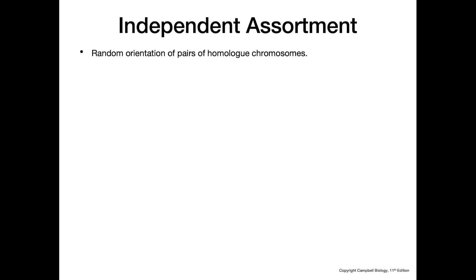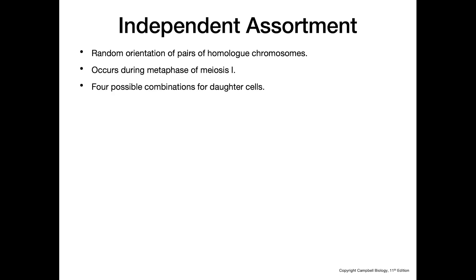Looking at independent assortment first — that's going to be the random orientation of pairs of homologous chromosomes. This occurs during metaphase one of meiosis one, and there are four possible combinations for these daughter cells based on how these chromosomes line up at the metaphase plate.